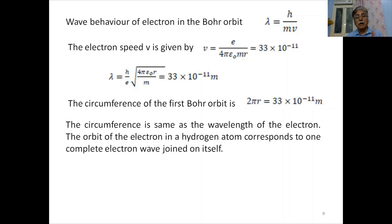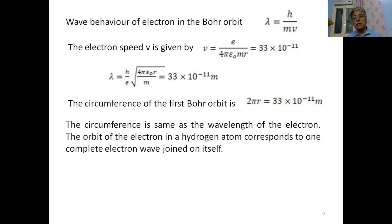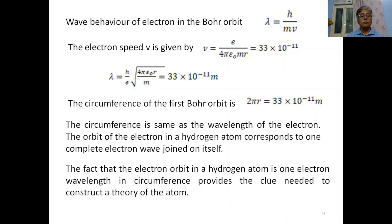The orbit of the electron in a hydrogen atom corresponds to one complete electron wave joined on itself. According to the de Broglie principle, a matter wave is associated with the electron with wavelength λ as calculated above, and 2πr — the circumference — is the same as the wavelength. The fact that the electron orbit is one electron wavelength in circumference provides the clue needed to construct a theory of the atom — that was the later development in quantum theory.